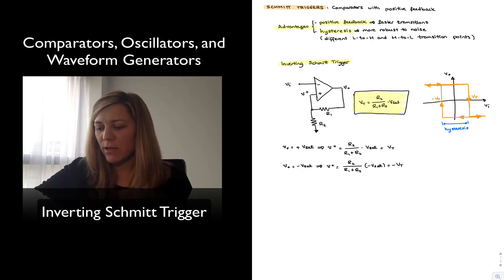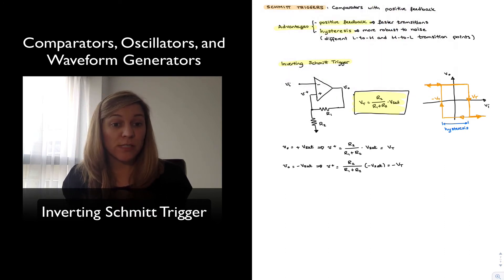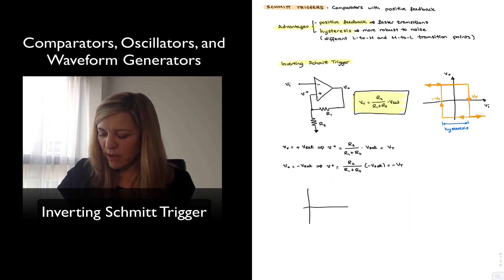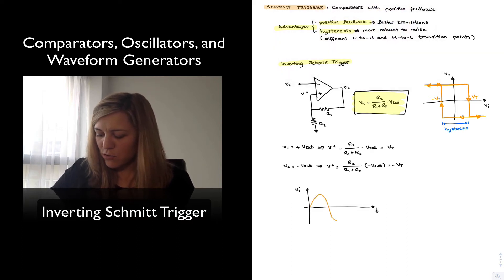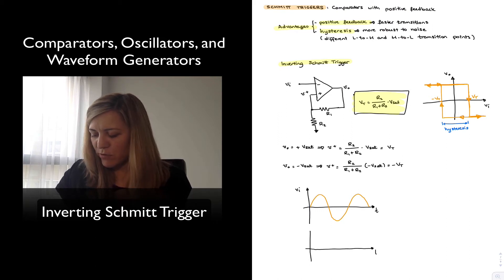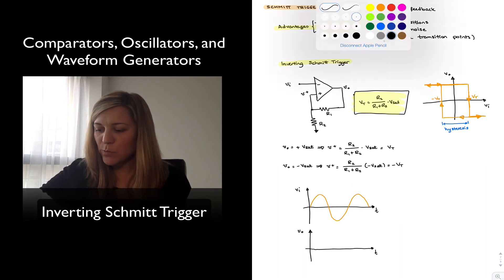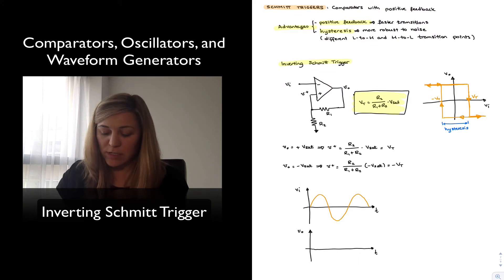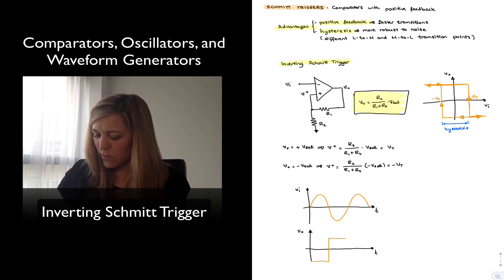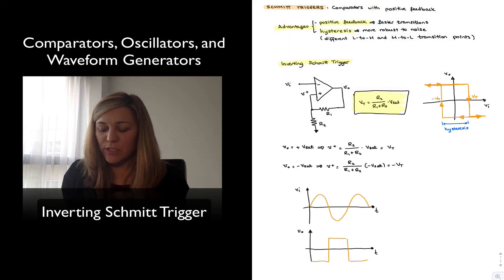Hysteresis makes the circuit more robust to noise in the input. Let's imagine we have a clean sinusoidal input signal. If we had an open-loop comparator with no hysteresis, with the reference voltage sitting at zero — that is our transition voltage — the output of our inverting comparator will be low whenever Vin is high, and high whenever Vin is low, giving a clean square signal.